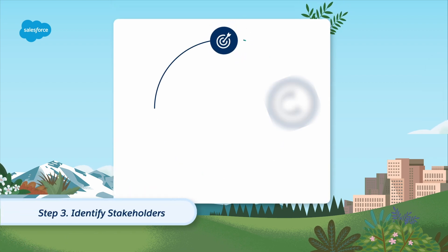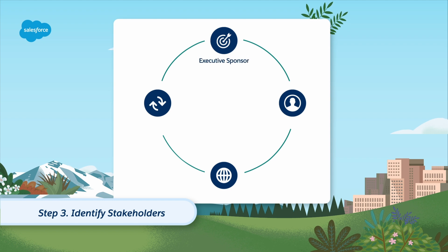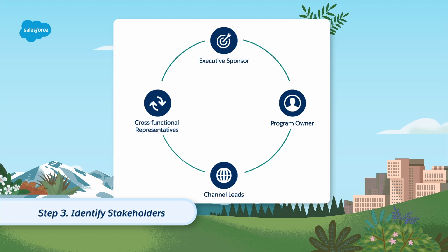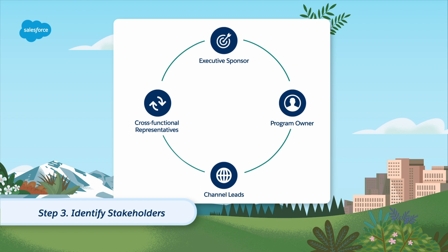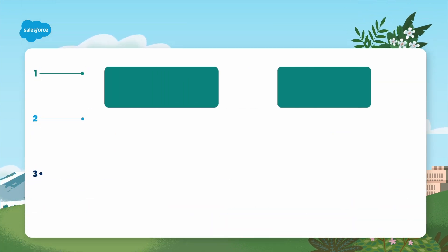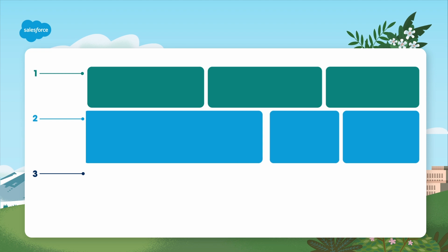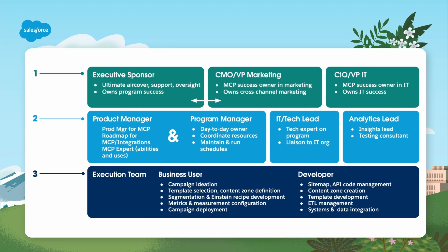Step three: identify stakeholders. From C-suite to day-to-day marketers, get the right people involved. You'll need to identify an executive sponsor, program owner, channel leads, and cross-functional representatives. Designate someone to have the account administrator user role in personalization, and get to know your account team at Salesforce. Identify key stakeholder functions and ensure they are aware, committed, and trained for their role in your implementation project and beyond.